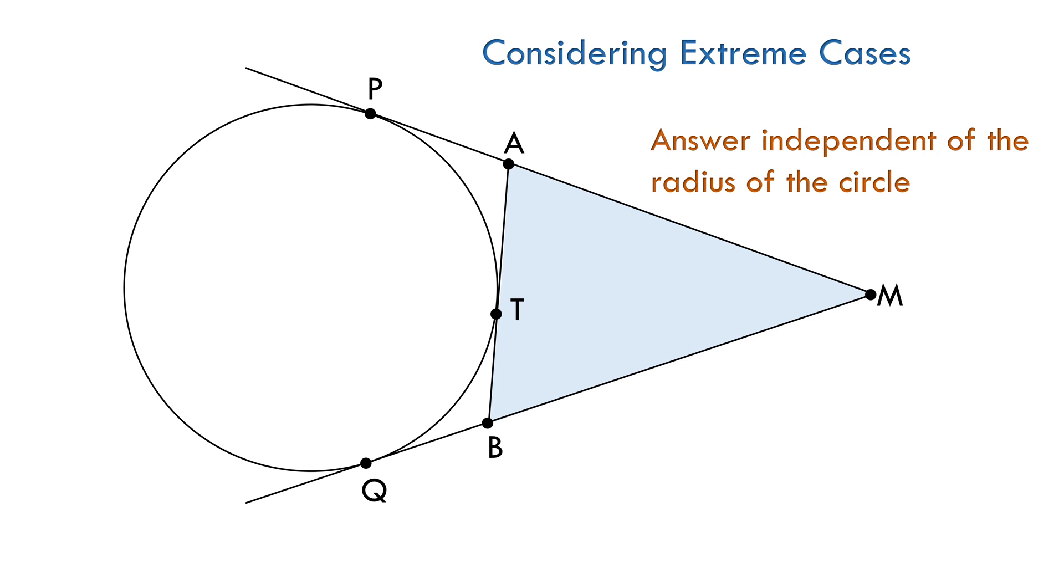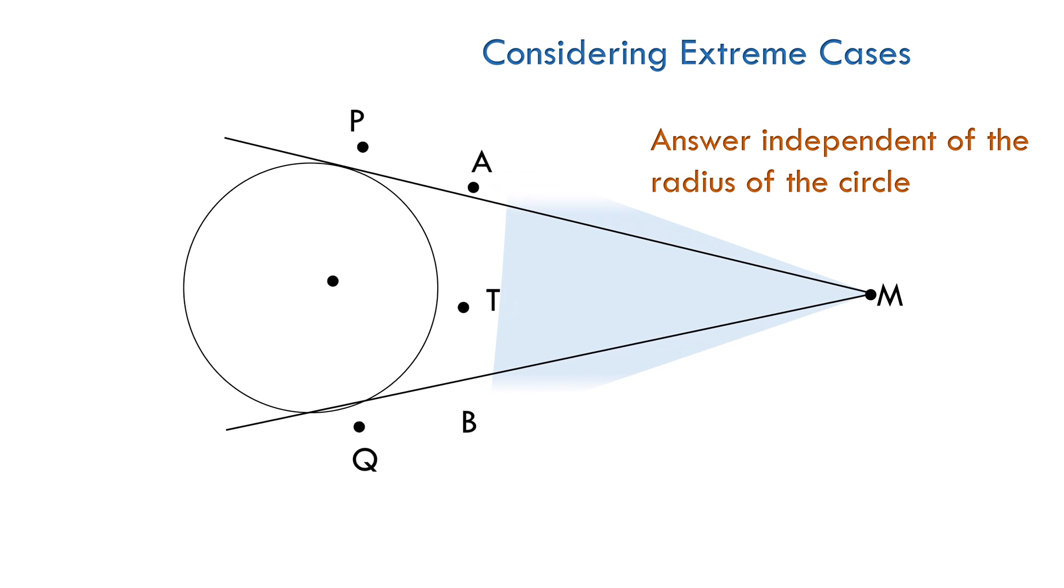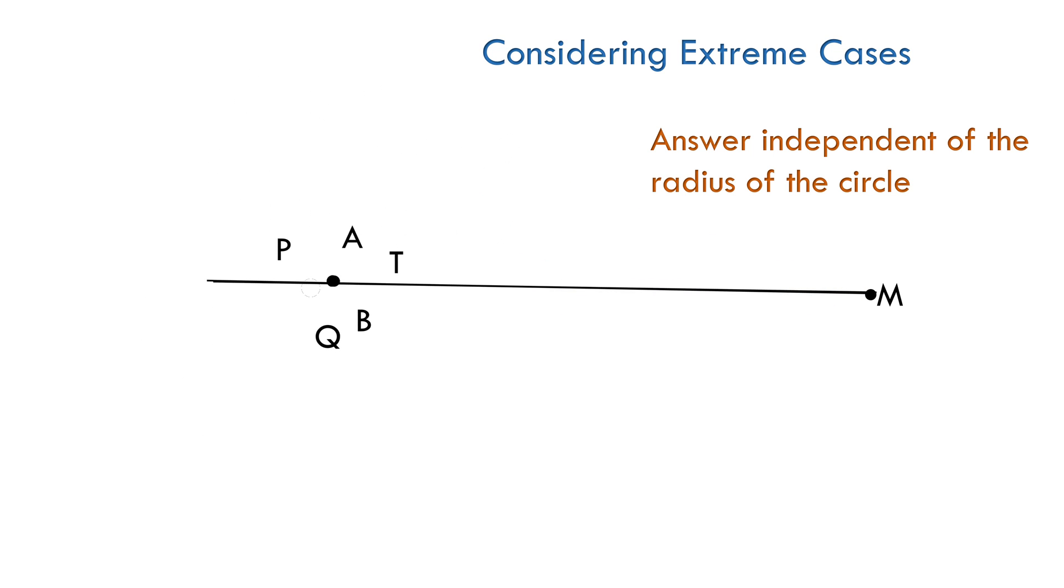So what we'll do is consider the radius of the circle to be very small, so small that its radius is zero. In other words, so small that the circle is just a point. Now, all these points will coincide, making the length of AB zero.